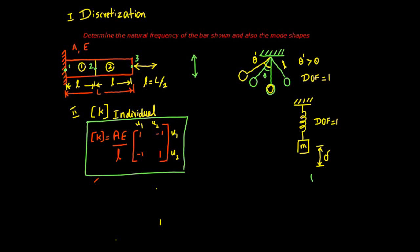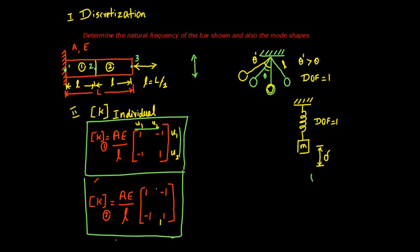The stiffness matrix of element number two is the same as element number one, since the material and geometry have not changed. It is (AE/l) times [1, -1; -1, 1], but with degrees of freedom u2 and u3. Marking these templates makes assembly easy, especially as you progress toward two-dimensional element problems.